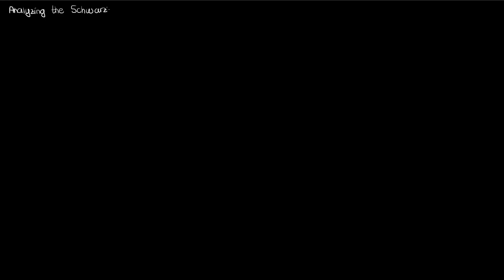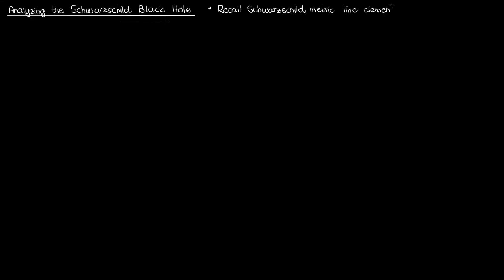We spent much of the last video introducing black holes and specifically the concept of a Schwarzschild black hole. In this video we're going to go into more depth with our discussion on the Schwarzschild black hole. Let's start by recalling the Schwarzschild metric. Remember that the line element for a spherically symmetric spacetime geometry is the following — I'll call this equation 1.